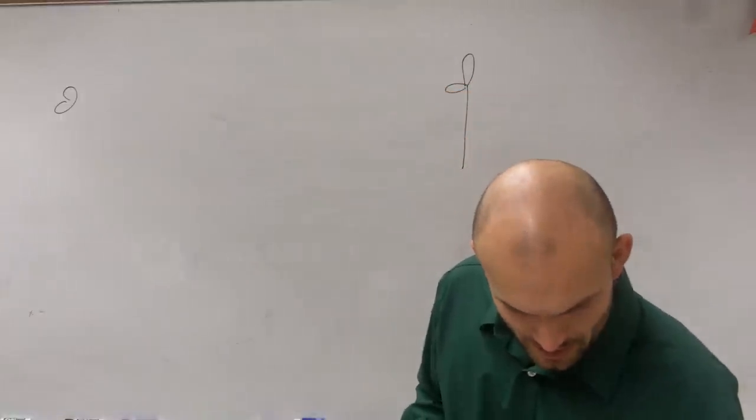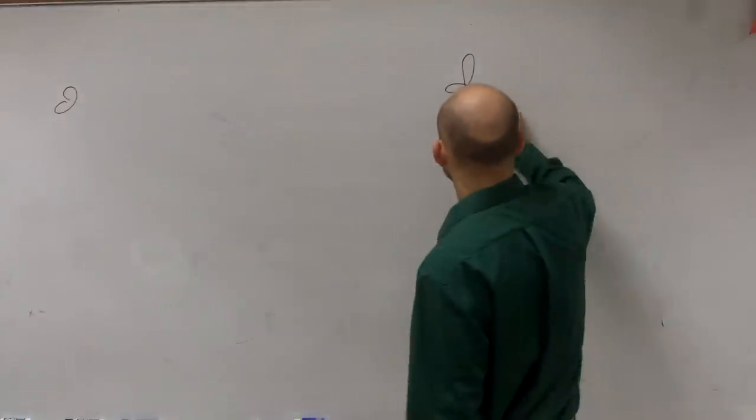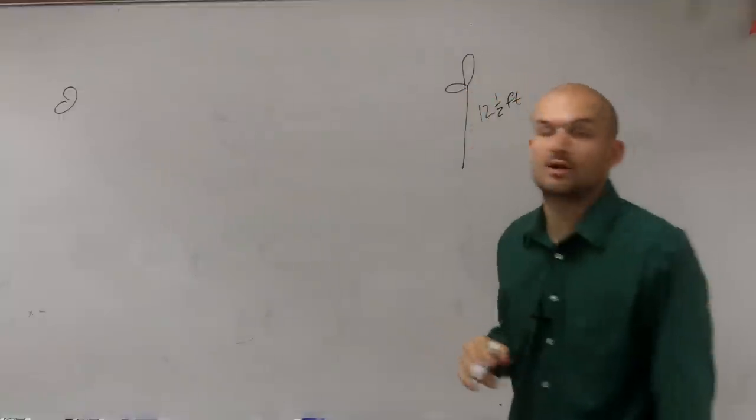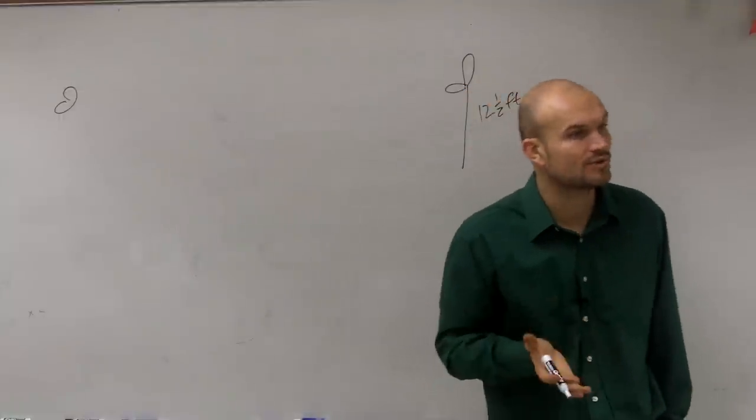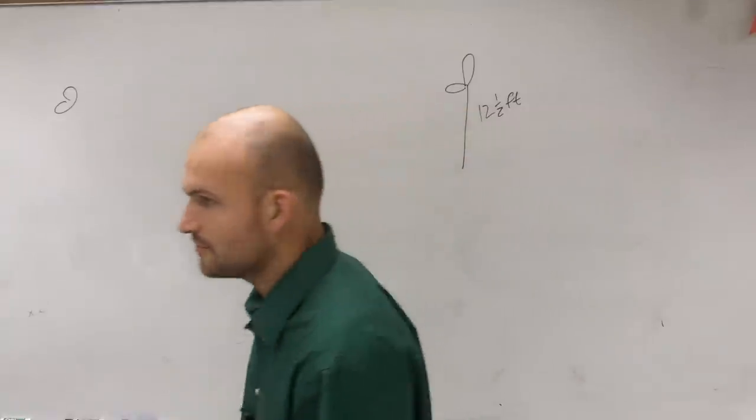So we have a nice little backboard and it says the height of an outdoor backboard is 12 and a half feet. Now I really do not like using feet. So what I'm going to do is I'm going to put this into inches. So go and convert them from feet to inches.